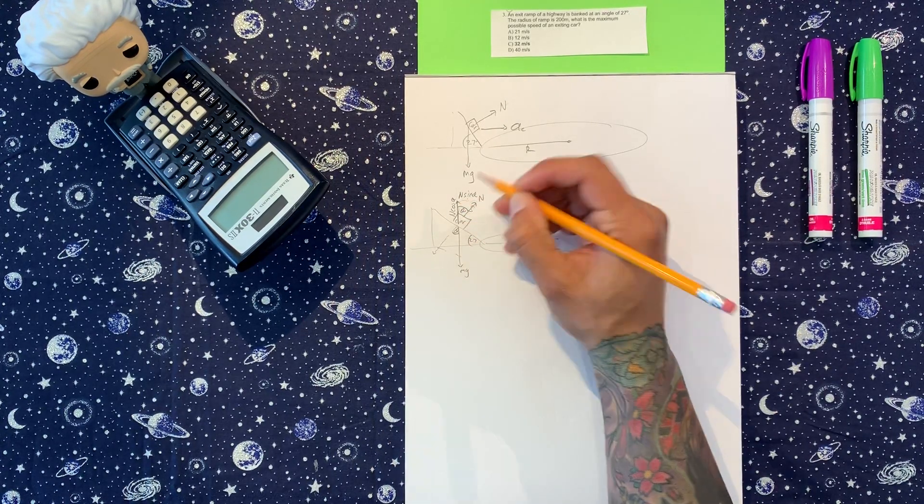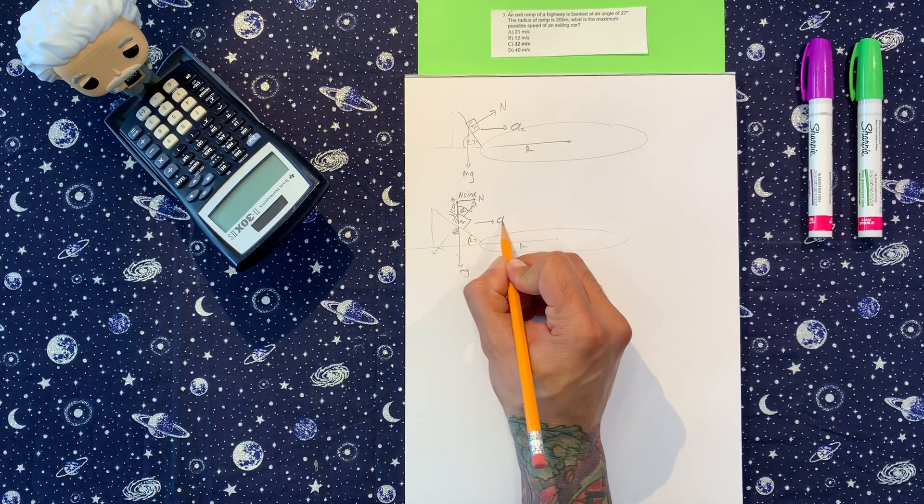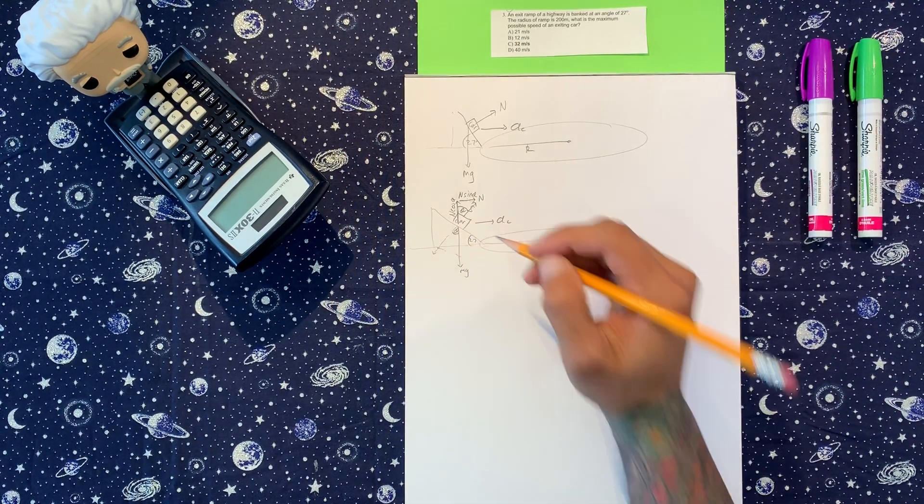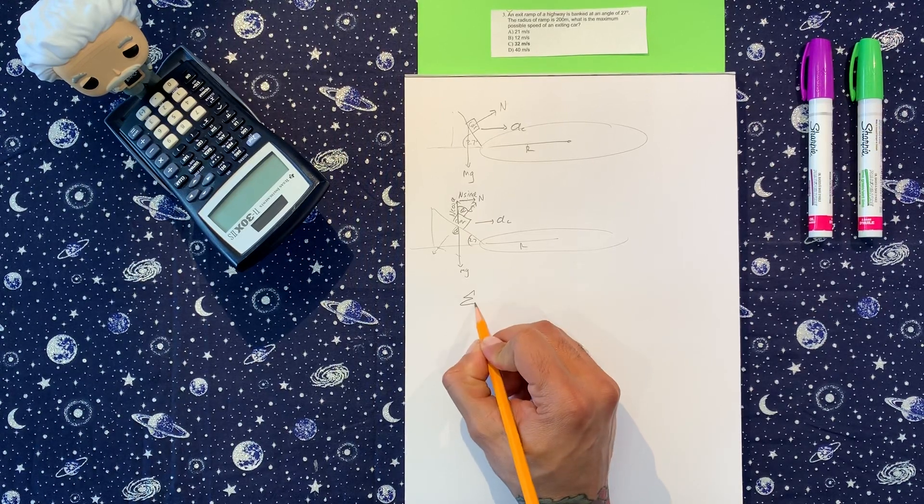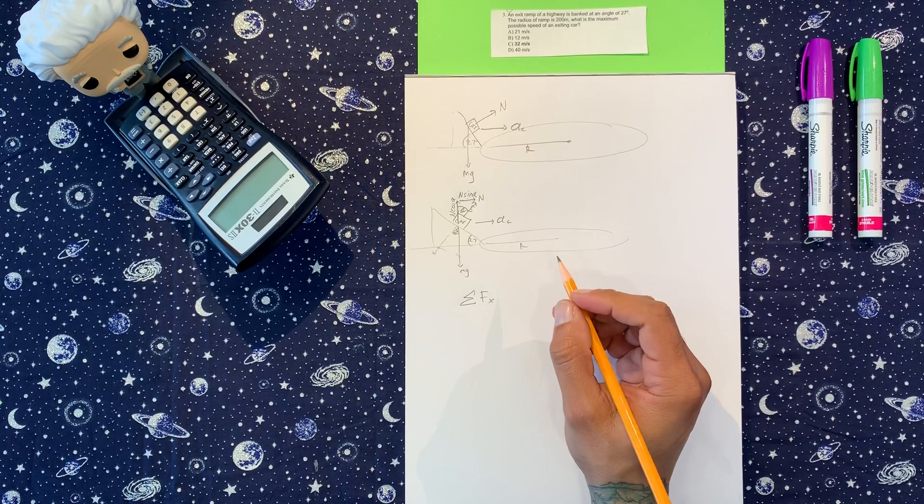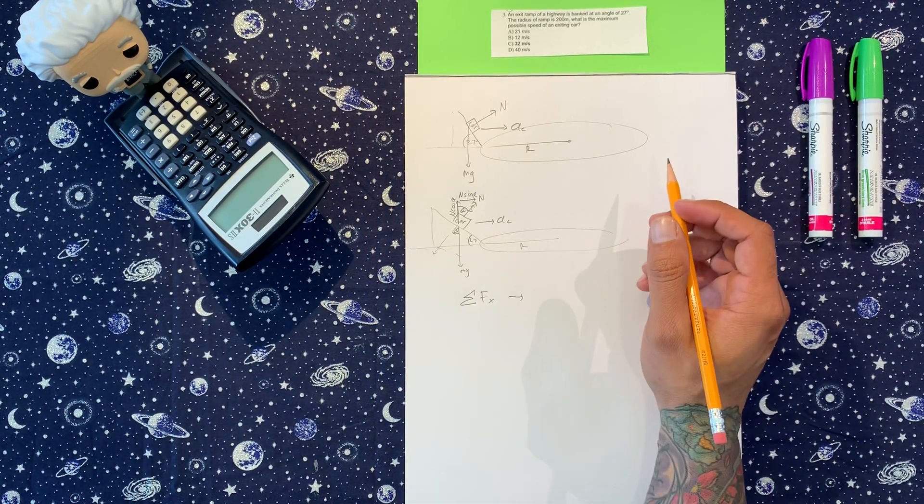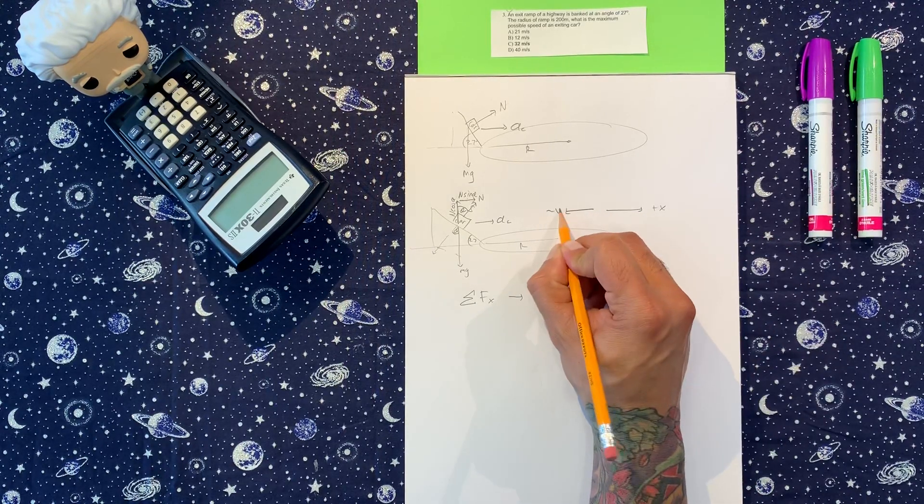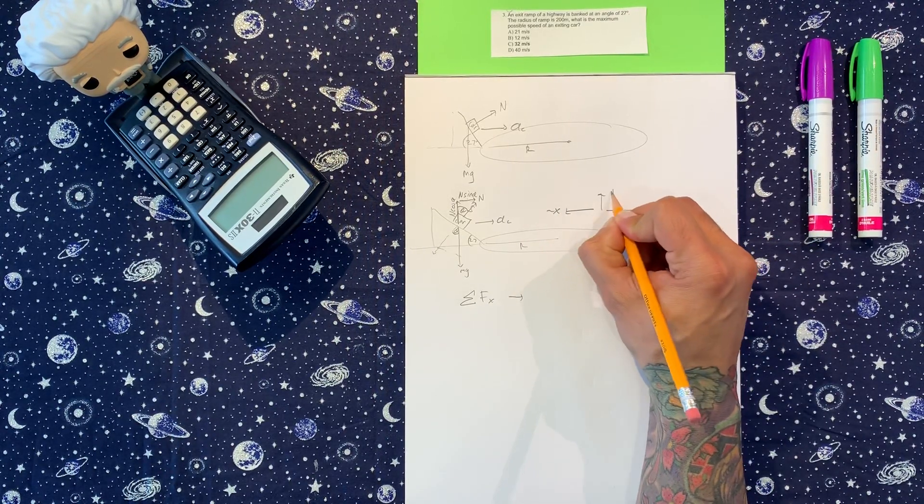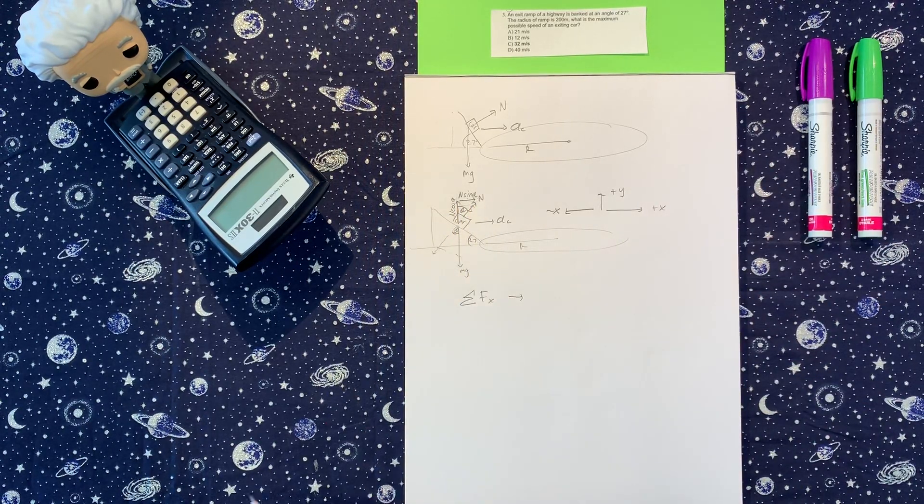We got this force, we got that one, and we know the acceleration is going inward, and we got MG going down. Now let's do sum of forces for this car. This is the positive x direction, this is the negative x direction, positive y going up. The only thing we have in the x is this one here. So n sine theta is going to equal ma, but centripetal ma, because it's going towards the middle.